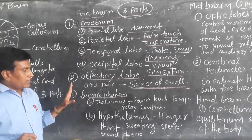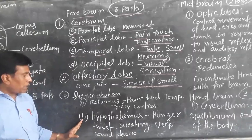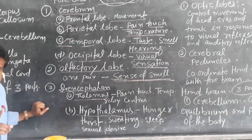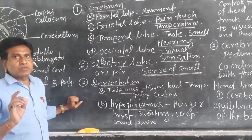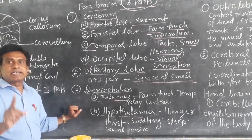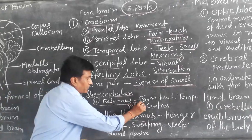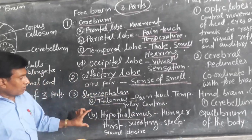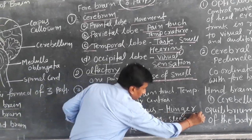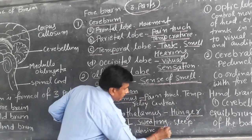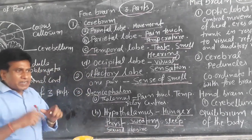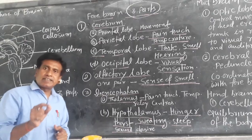The diencephalon is further divided into two parts: thalamus and hypothalamus. The thalamus is known as the relay center, and it is also responsible for pain, touch, and temperature. The hypothalamus is responsible for hunger, thirst, sweating, sleep, sexual desire, blood pressure, and water balance.